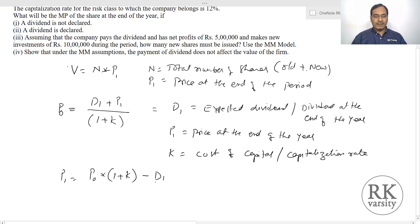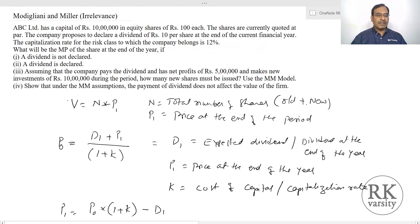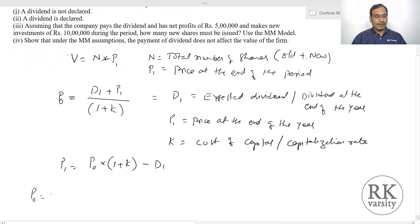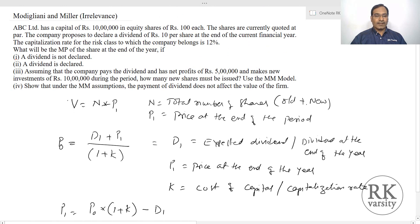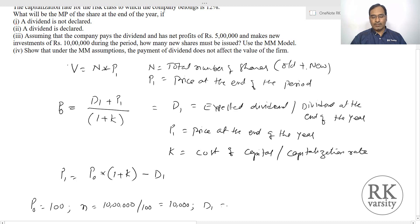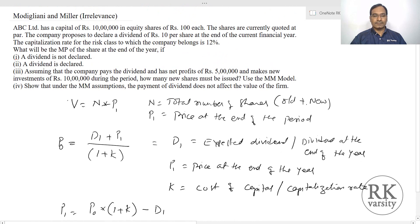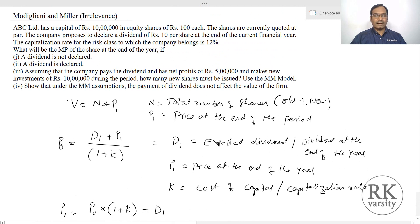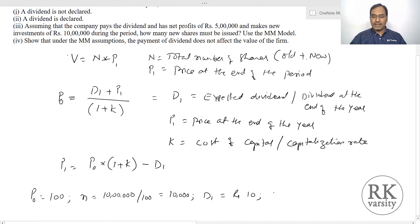ABC Limited has a capital of 10 lakhs in equity shares of rupees 100 each. The shares are currently quoted at par, meaning P0 equals 100. The current shares N equals 10 lakhs divided by 100, which is 10,000 shares. The company proposes to declare a dividend of rupees 10, so expected dividend D1 equals rupees 10. The capitalization rate of the firm's class is 12%, so K equals 12%.